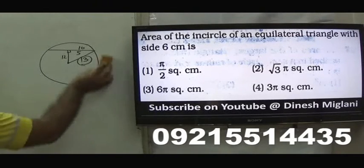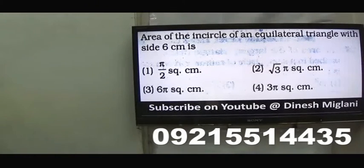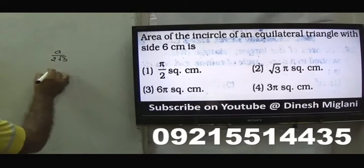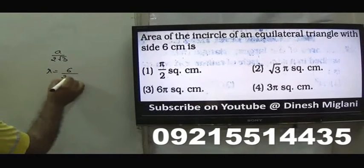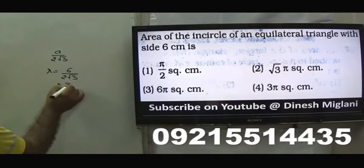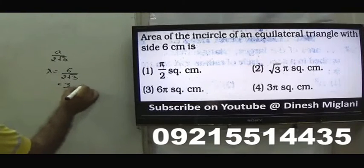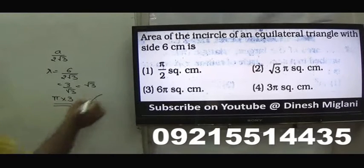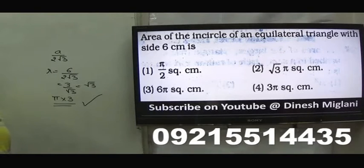Eighth question: find the area of the incircle of an equilateral triangle with side 6. The inradius formula is a/(2√3) = 6/(2√3) = 3/√3 = √3. Area = πr² = π×3 = 3π. The fourth option is the answer.